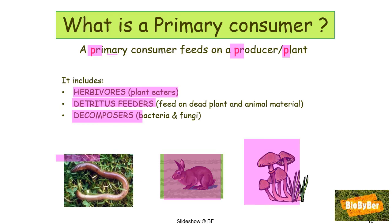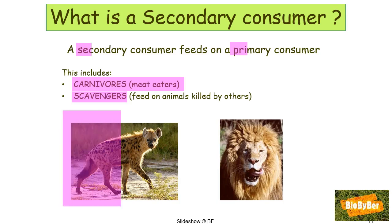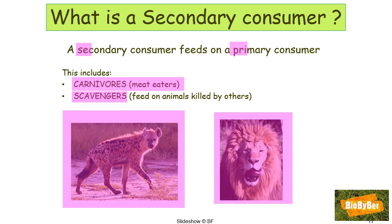What is a secondary consumer? A secondary consumer feeds on a primary consumer — just as you go to secondary school after primary school. Secondary consumers are rather 'savage' — 's' for savage, 's' for secondary — because they are eating another animal. Secondary consumers include carnivores, which are the meat eaters, and scavengers. Scavengers feed on animals that are killed by others. Our friend the hyena here is a scavenger because it feeds on animals killed by the carnivore, like the lion.